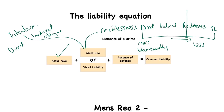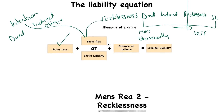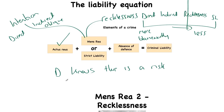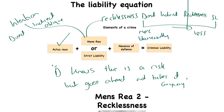There is one key phrase I want you to be able to say immediately when asked about recklessness. The definition we are going to use is that a defendant knows there is a risk but goes ahead and takes it anyway. That is our definition of recklessness: the defendant knows there is a risk but goes ahead and takes it anyway.